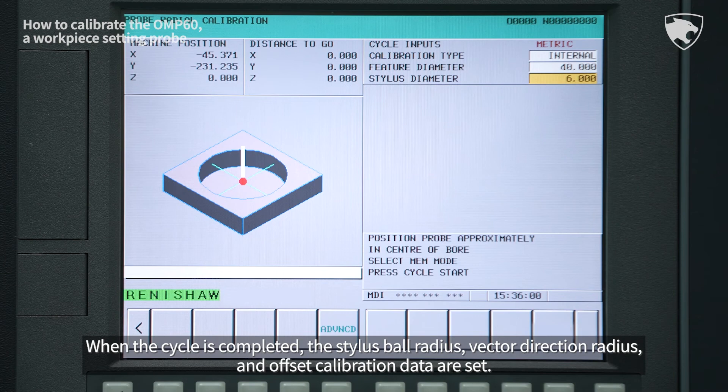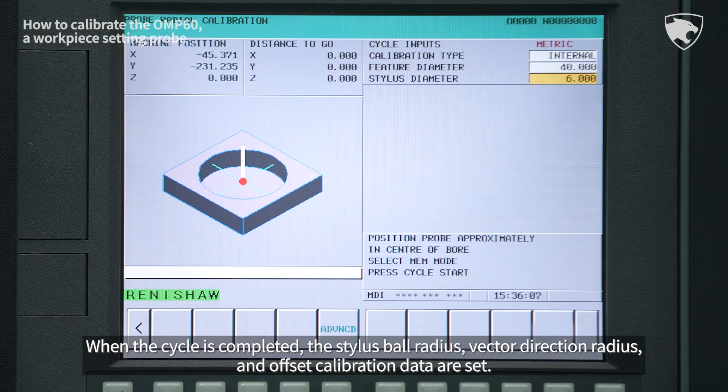When the cycle is completed, the stylus ball radius, vector direction radius, and offset calibration data are set.